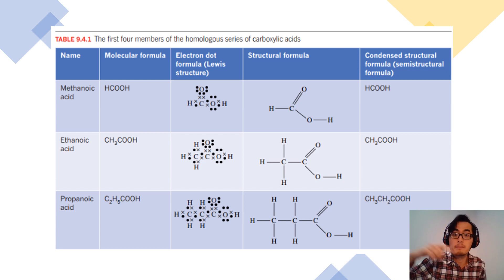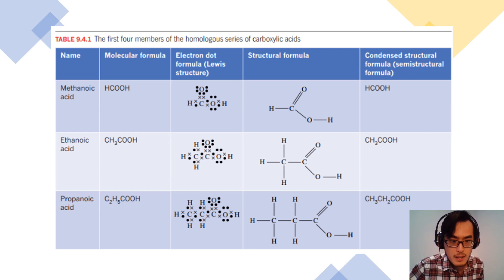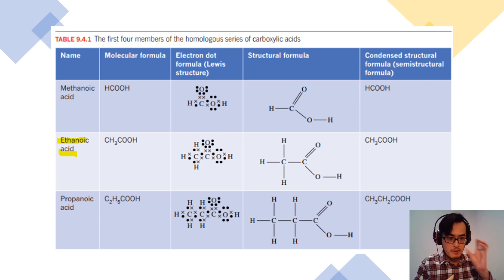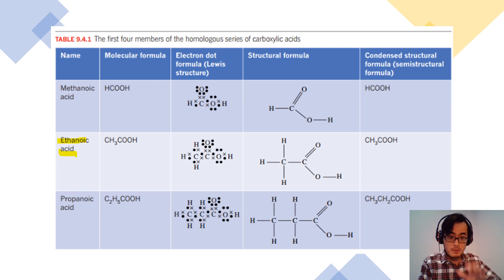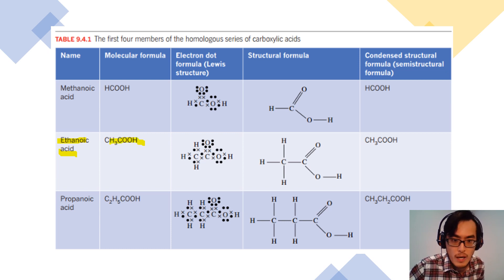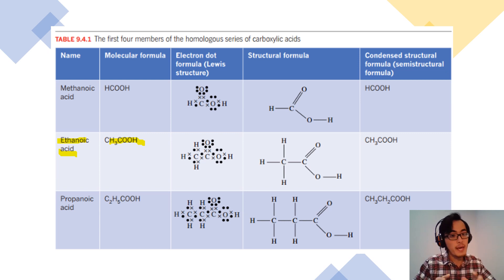The structure shown in the previous slide has two carbon atoms, so the name is ethanoic acid. Sometimes if you go to the supermarket and purchase vinegar, if you look at the label it's written as acetic acid, and it says it's no less than 4% — usually between 4% and 5% of that container consists of acetic acid, or ethanoic acid. The formula is CH₃COOH. What you need to know from this slide is the difference between electron dot formula, structural formula, and condensed structural formula.